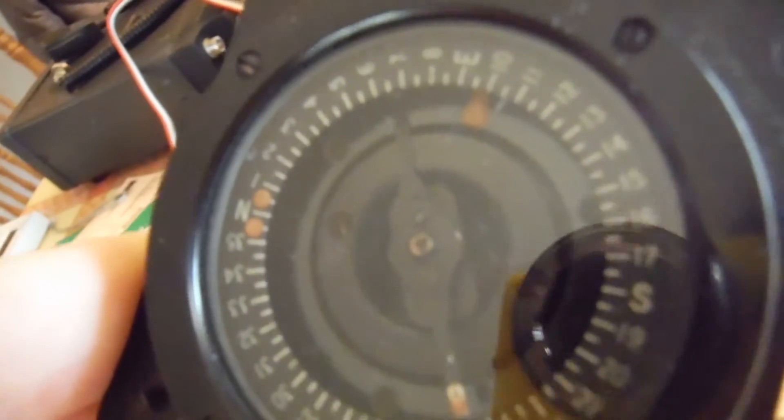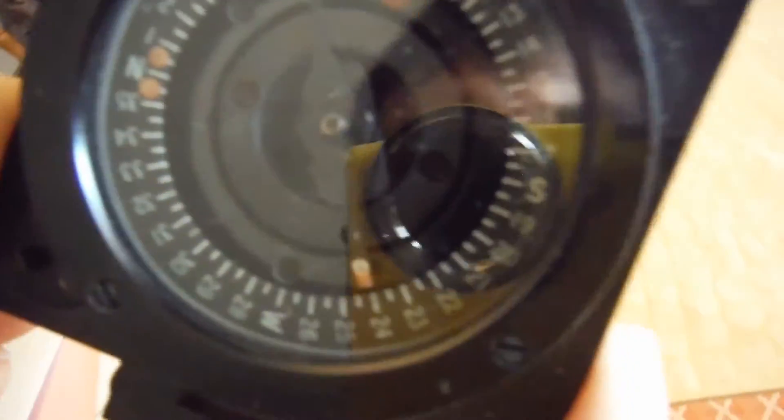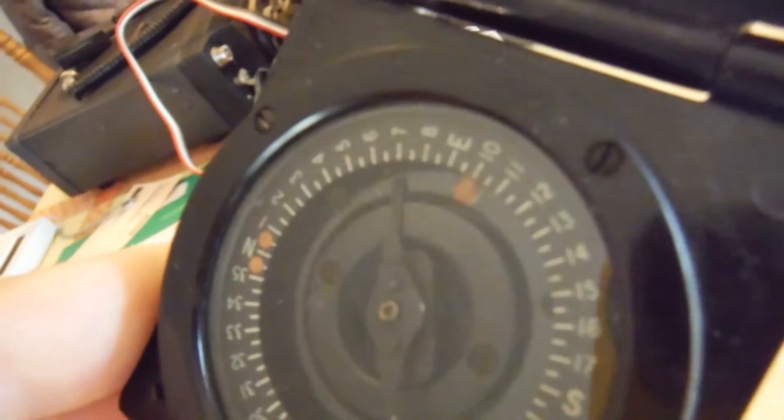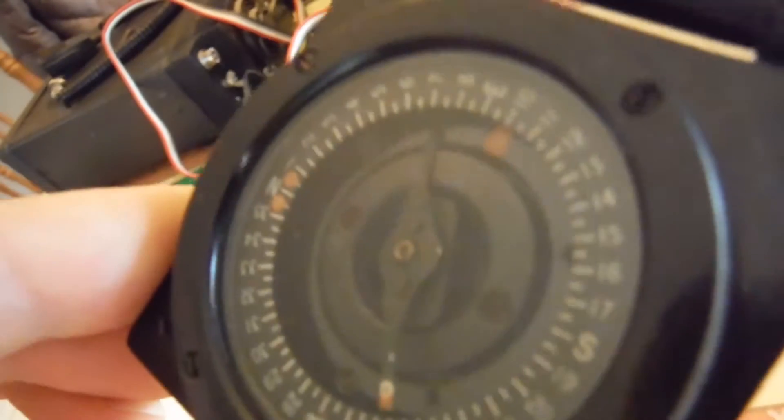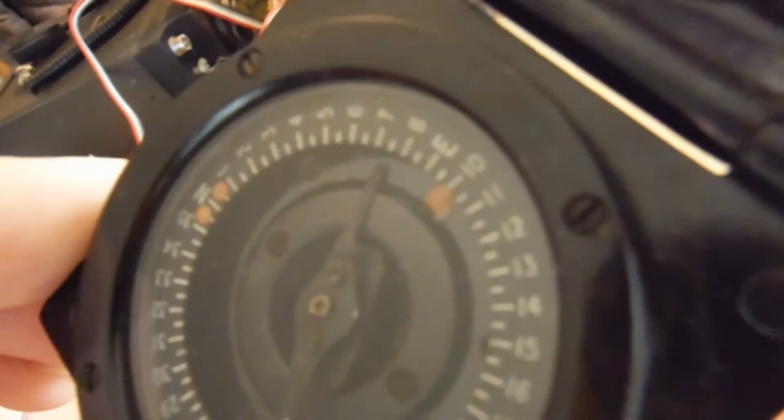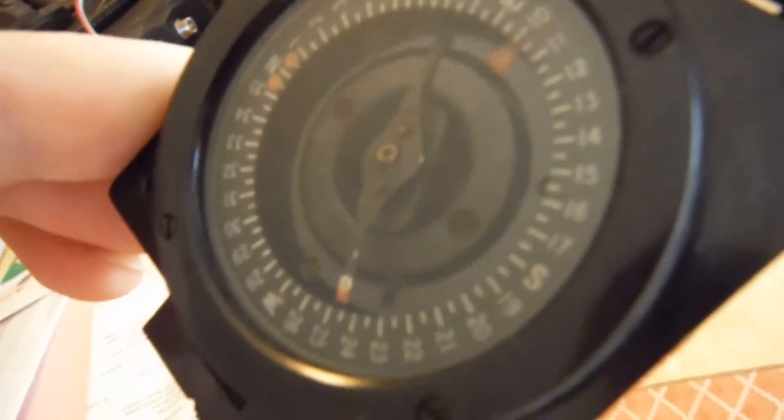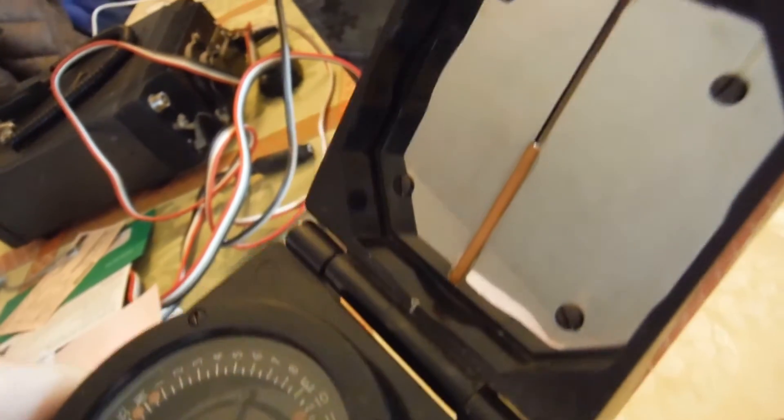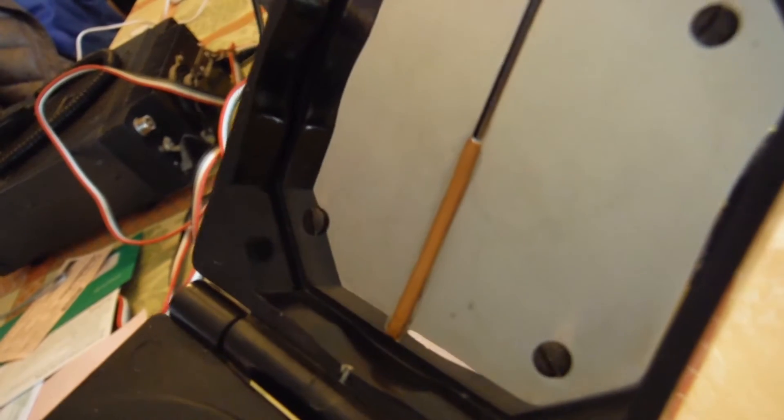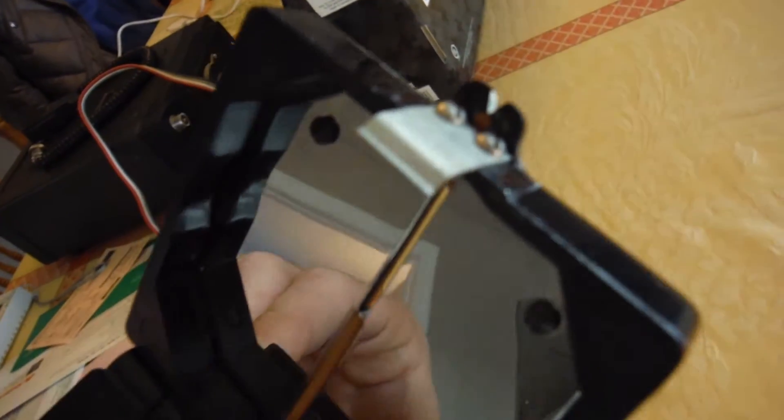And you can see quite a bit of Radium under the crystal there. A couple spots on the needle there, a few on the degrees card there. And then you also see a big old line of exposed Radium paint right there on the sighting mirror. And then another little spot there at the top. A little dot underneath there too. Crap is everywhere.